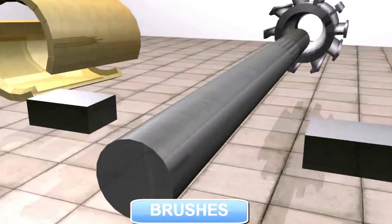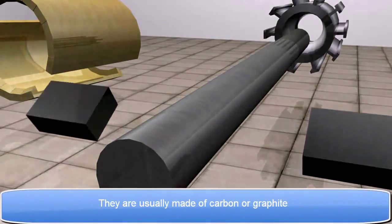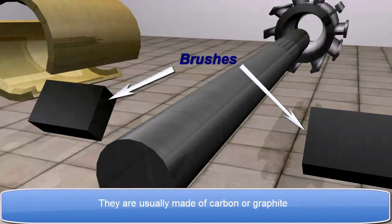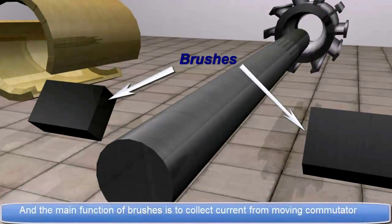Brushes. They are usually made of carbon or graphite. And the main function of brushes is to collect current from moving commutator.